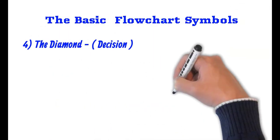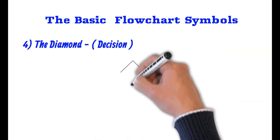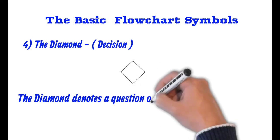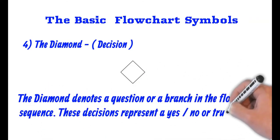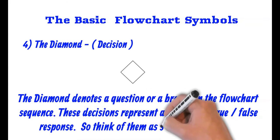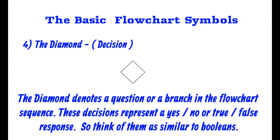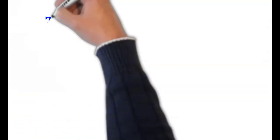The next is the diamond. The diamond represents a decision in your flowchart. The diamond denotes a question or a branch in the flowchart sequence. These decisions represent a yes or no, true or false response. So think of them as similar to booleans.